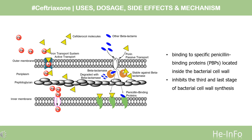Mechanism of Action. Ceftriaxone works by inhibiting mucopeptide synthesis in the bacterial cell wall. The beta-lactam moiety of ceftriaxone binds to carboxypeptidases, endopeptidases, and transpeptidases in the bacterial cytoplasmic membrane. These enzymes are involved in cell wall synthesis and cell division. Binding of ceftriaxone to these enzymes causes them to lose activity; therefore, the bacteria produce defective cell walls, causing cell death.